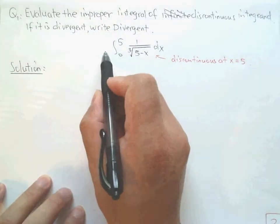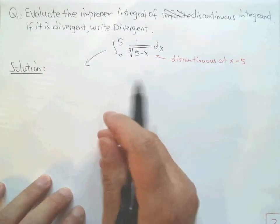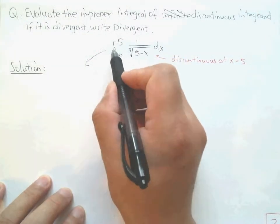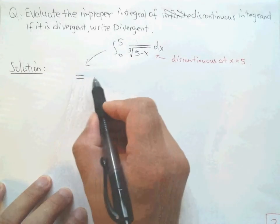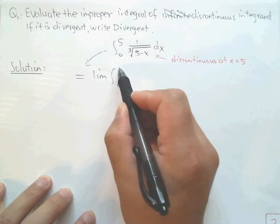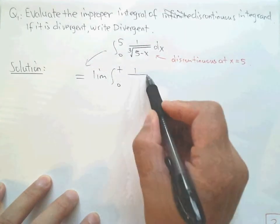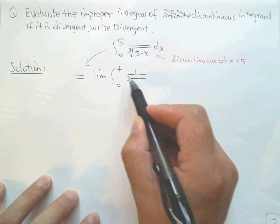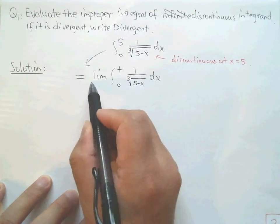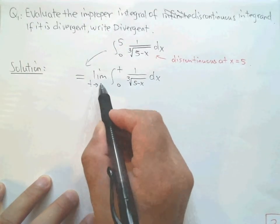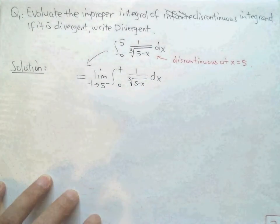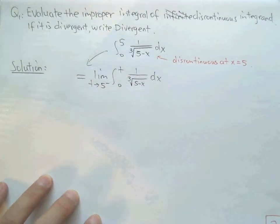Two steps for the calculation. First step: find the definite integral, but replace the upper limit with t. Second step: take the limit as t approaches five from the left side — that is the left-side limit. This is the definition applied to the example.